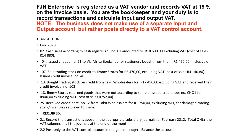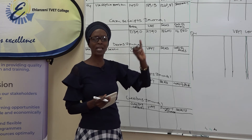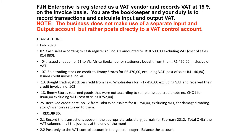On the 7th, they say sold trading stock on credit. We are selling trading stock on credit, so the book where we record credit sales is our debtors journal. We have to check whether the amount is inclusive or exclusive. Trading stock sold on credit to Jimmy Stores for R6,470 excluding VAT. That is an exclusive amount, so we must use the exclusive formula.